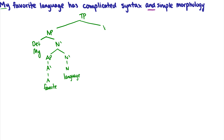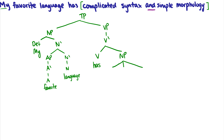Then 'has complicated syntax and simple morphology.' What does it have? It has something, so this thing has to be the complement — daughter of a V-bar, sister to a V. This whole coordinated NP comes after. The question is what do we do with 'and'? Typically we do tri-branching: the NP goes to another NP, a conjunction, and then another NP. The conjunction is 'and,' and then we do the two NPs separately: 'complicated syntax' and 'simple morphology.'